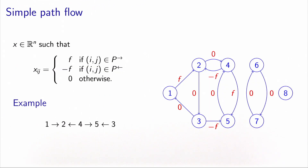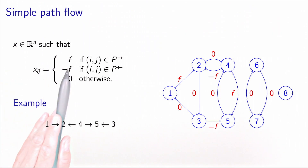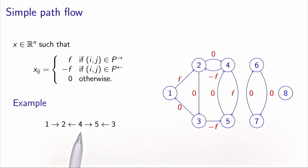It can also be useful to consider flows on a path. The concept of a simple path flow models the fact that we are carrying some units of flow from an origin to a destination. We consider a path P — in this case, the path 1, 2, 4, 5, 3. We say that a vector x in ℝⁿ is a simple path flow associated with path P carrying an amount of flow f, if the value of x equals f for all forward arcs — in this case (1,2) and (4,5) — and 0 otherwise.